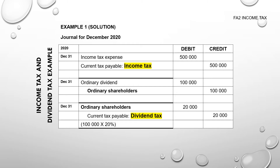Here is the solution. First, we must accrue the income tax expense. Being an expense, we debit the income tax expense account. Please bear in mind that the word 'expense' distinguishes it from income tax paid, which represents a cash flow, and from current tax payable, which indicates a liability. We raise the actual liability as current tax payable: income tax. So we debit income tax expense R500,000 and credit current tax payable: income tax R500,000.